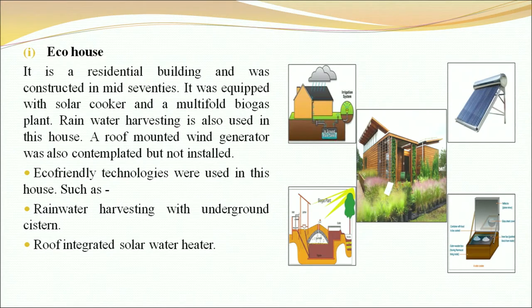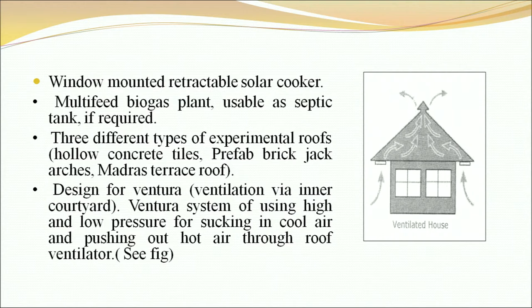First is the Eco House. It is a residential building constructed in the mid-1970s. It was equipped with a solar cooker and a multi-fold biogas plant. Rainwater harvesting is also used in this house. A roof-mounted wind generator was also contemplated but not installed. Eco-friendly technologies used include rainwater harvesting with underground cistern, roof-integrated solar water heater, window-mounted retractable solar cooker, multi-feed biogas plant usable as a septic tank if required, three types of experimental roofs — hollow concrete tiles, PFAP big jack arches and Madras terrace roof — and a Ventura system for sucking in cool air and pushing out hot air through roof ventilators.